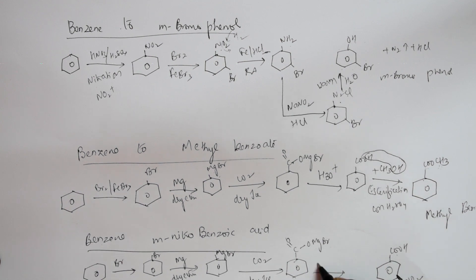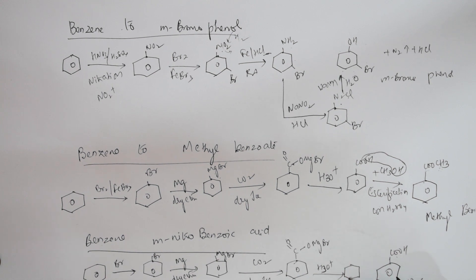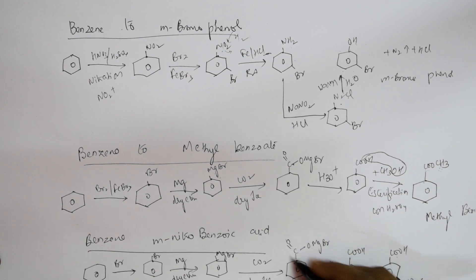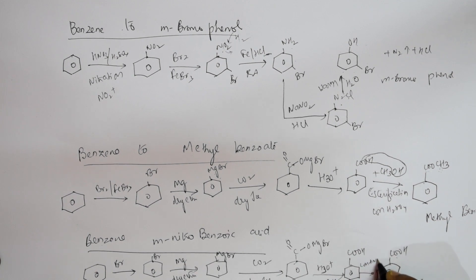Adding an acidic medium removes MgBr — HOH reacts and you are left with COOH, giving benzoic acid with MgOHBr as a byproduct. But we are not done yet — we still need to introduce NO2.